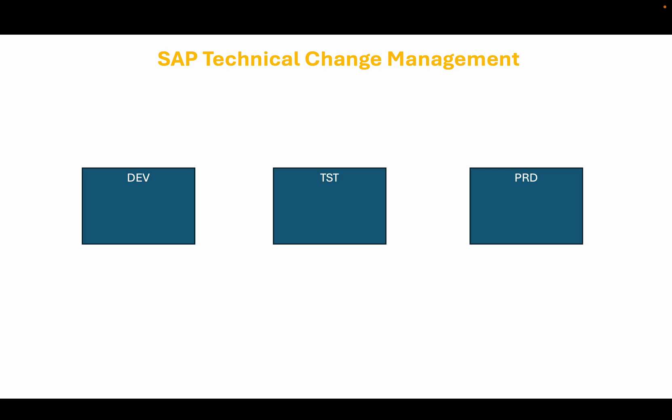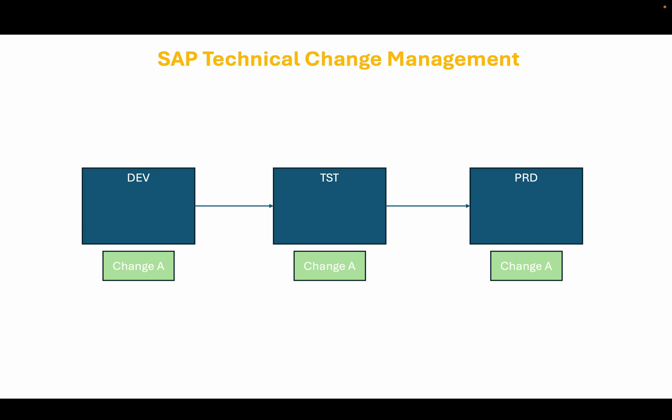Usually an SAP landscape will contain three systems. One is the development system where the changes are made or programs are developed. Then those changes will be moved into a quality assurance system, also known as the test system. Testing will happen in the quality assurance system. Once the testing is completed and passed, the same changes will be moved into the production system. This way, we can ensure that the SAP landscape is synchronized and the changes are moved through the landscape in a controlled manner.